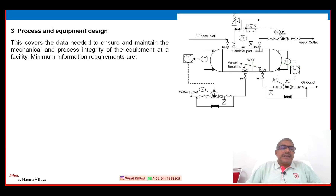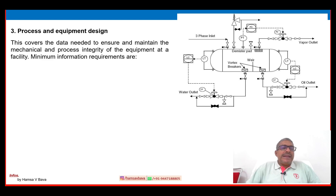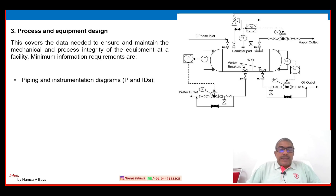Number three: process and equipment design. This covers the data needed to ensure and maintain the mechanical and process integrity of the equipment at a facility. The minimum information requirement includes the piping and instrumentation diagram — P&ID. You can see a sample P&ID provided on the right side.